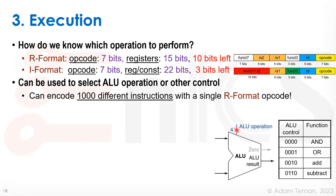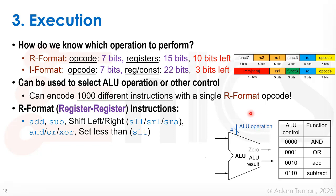The R-format register-register instructions include: ADD and SUB for addition and subtraction; shift operations — shift left logical (SLL), shift right logical (SRL), and shift right arithmetic (SRA) — note there is no shift left arithmetic as it isn't needed; bitwise operations AND, OR, and XOR; and a set-less-than (SLT) operation which sets the output if the first operand is smaller than the second.